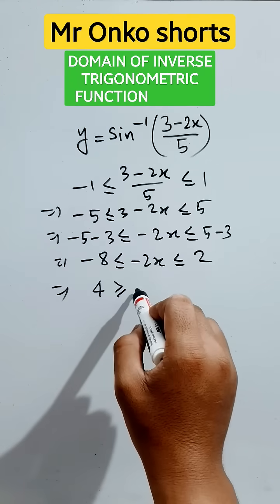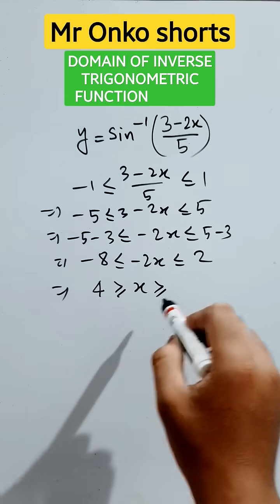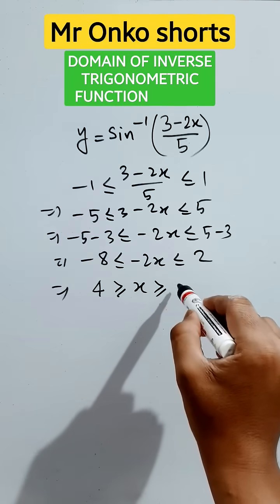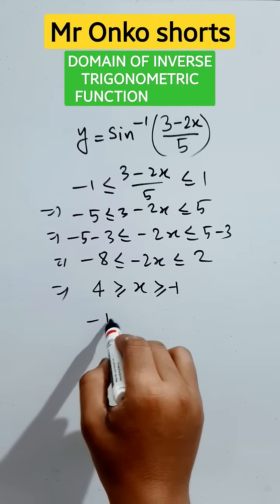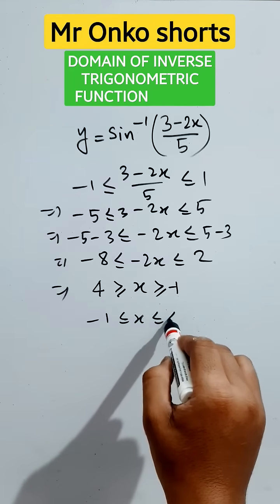The signs will be changed due to the inequalities properties. This is minus one. So it will be minus one less than or equals to x less than or equals to four.